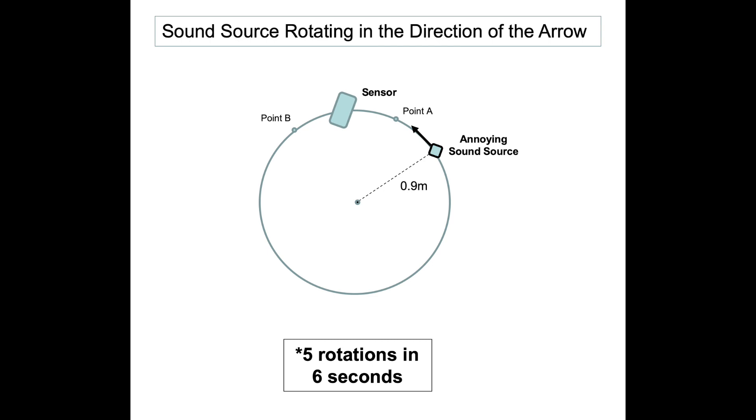So as this sound source is going in this circle, what I've done is I've placed a sensor. It's really my phone. It's got a great app on it, and it measures the changes in frequency relative to the sensor. So as the sound source is going around and around, the sensor will be able to catch higher and lower frequencies, and it's all due to this Doppler effect.